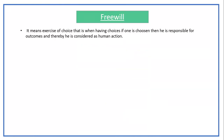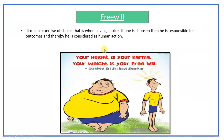The third criterion is free will. It means the exercise of choice — when one has a choice and has chosen, that person is responsible for the outcome, and thereby it is considered a human action. You have chosen, so it is your responsibility. Your height is your karma, but your weight is your free will. You have two options: to become slim or to become fat, and you have chosen.